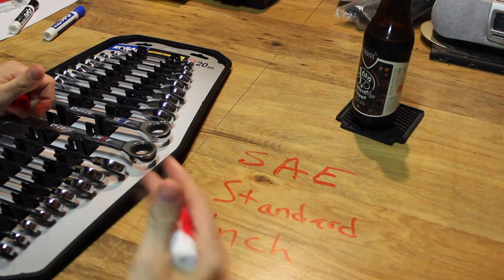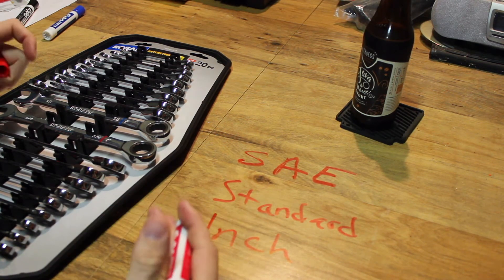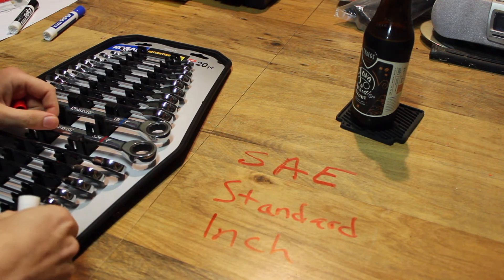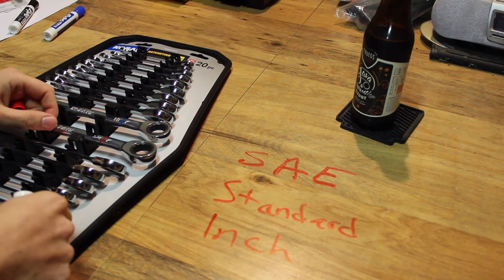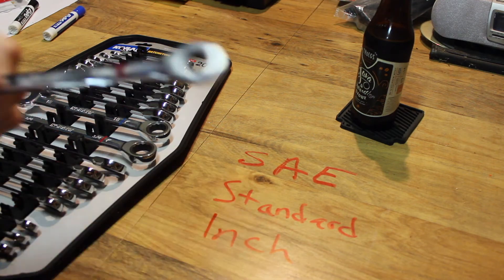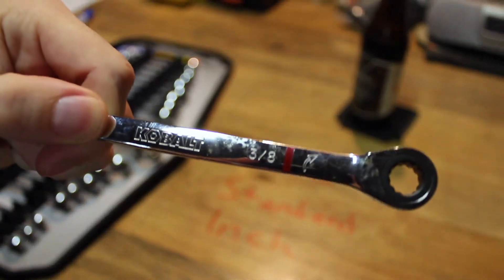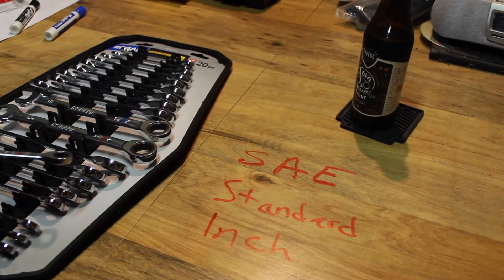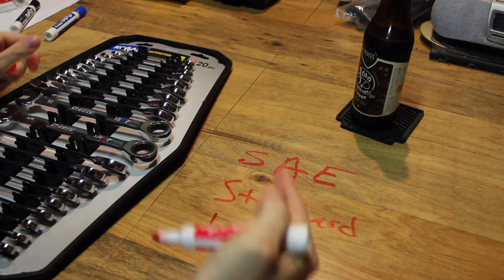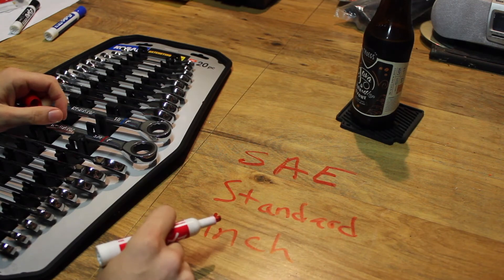It's generally sixteenths or thirty-seconds of an inch. Obviously it's not going to be four sixteenths — it's going to be a quarter. So instead of six sixteenths, it's three eighths. You've got to reduce your fractions, but that's a school topic and maybe I'll cover that in another video.